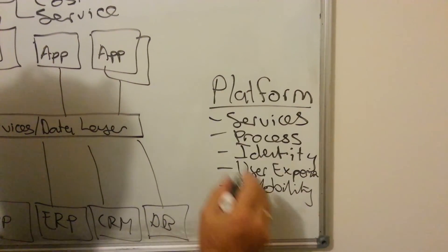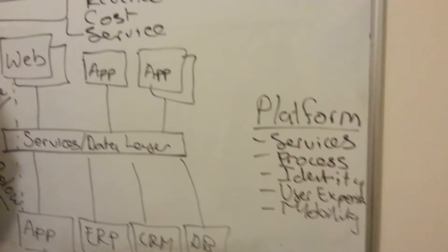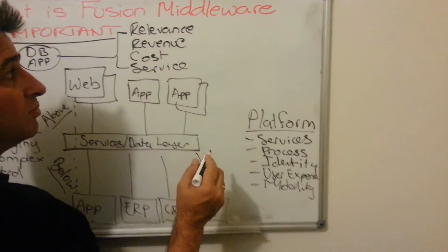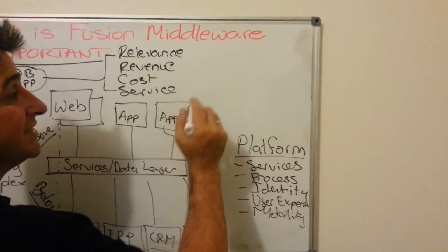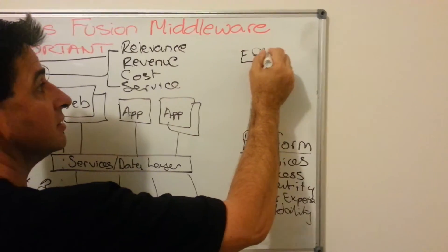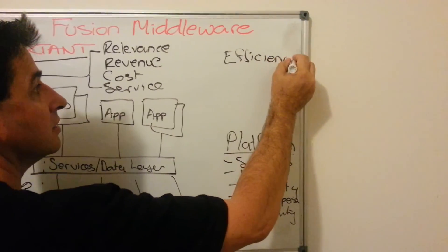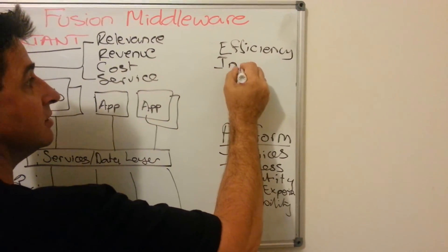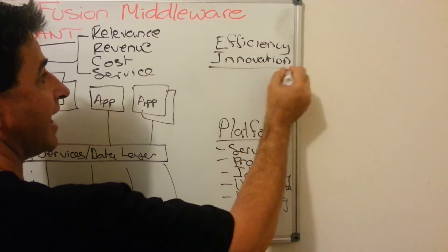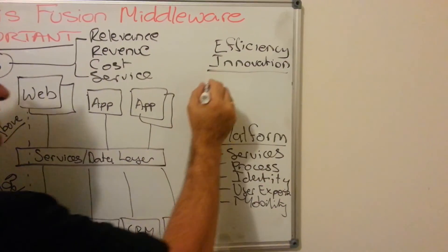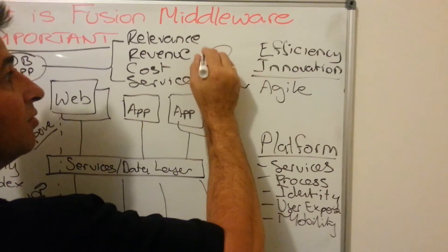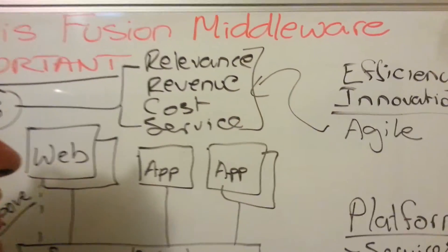That platform I'm talking about is what Fusion Middleware is. When you're dealing with that platform, what your organisation gets is the ability to have efficiency and innovation in its delivery capabilities, such that your organisation can now be agile and relate to everything I was talking about here. Thank you.